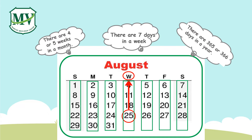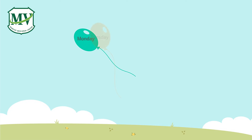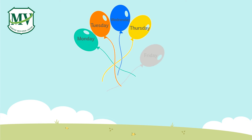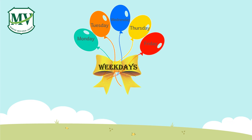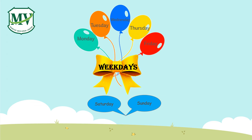We have 365 or 366 days in a year. Monday, Tuesday, Wednesday, Thursday, and Friday are known as weekdays. Saturday and Sunday are known as weekends.